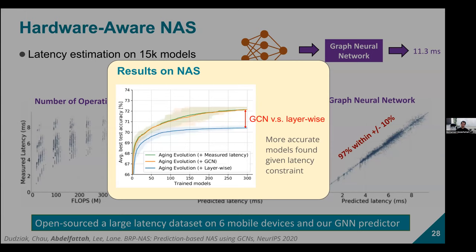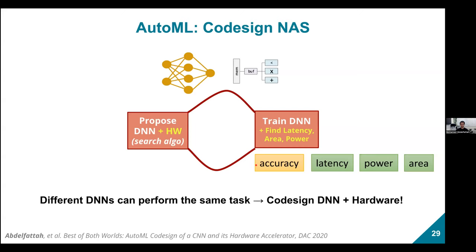We open-sourced a large latency dataset on six mobile devices along with the GNN-based predictor. We also confirmed that an accurate latency predictor improves NAS outcomes: comparing aging evolution with measured latency, our GCN predictor, and the layer-wise predictor, the GCN predictor finds better models more quickly and closely matches what the measured latency would give.